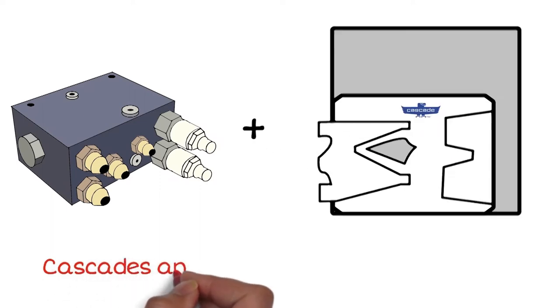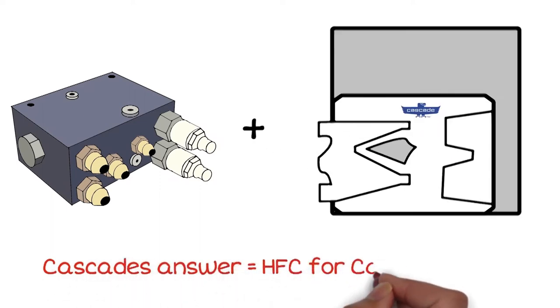Cascade has the answer. Hydraulic force control or HFC for carton clamps.